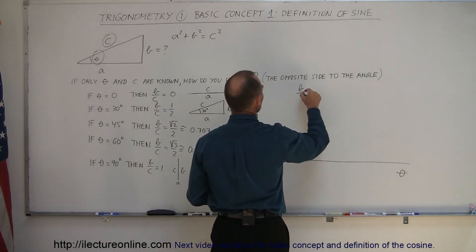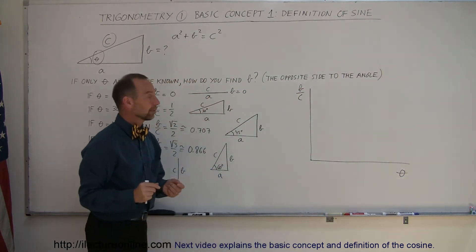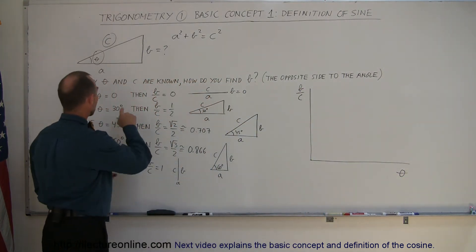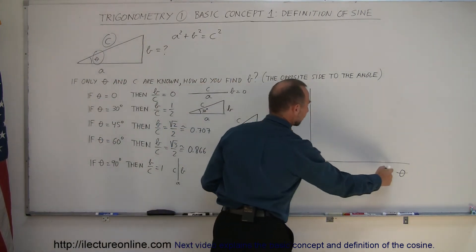Let's say we have the ratio of B to C and we compare that to the angle. If the angle is zero, then you get zero, so you start over here.